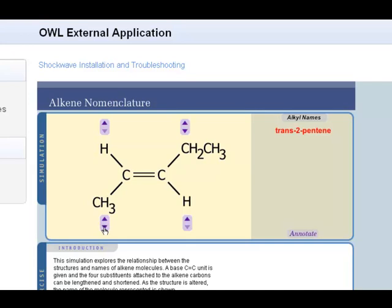Now I can make the cis-2-pentene isomer if I remove the methyl group here and put it up on the top.